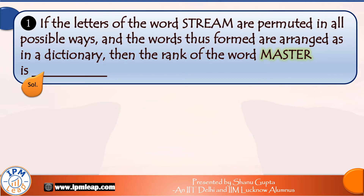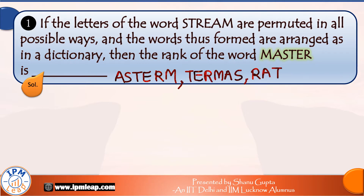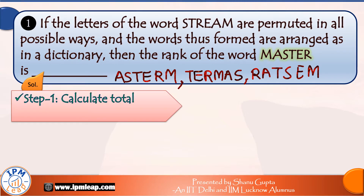There will be many such words when we rearrange these letters. For example, we may write terms like ratsem, and the list goes on. So our first step should be to get an estimate of the total number of words that are possible when we arrange these six letters.